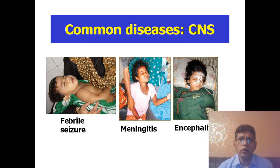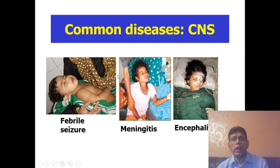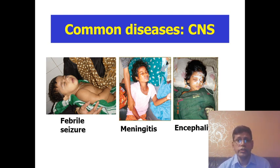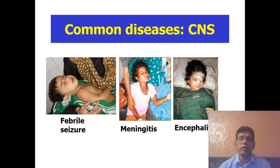Now we will learn common diseases, starting from the central nervous system downward. The first one is most important — you must learn one or two using the rule of three. For the central nervous system, you must learn febrile seizure — a child coming with fever and convulsion. Most important is febrile seizure, and then meningitis.